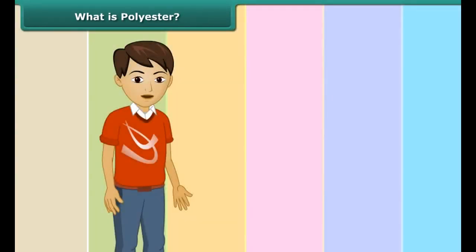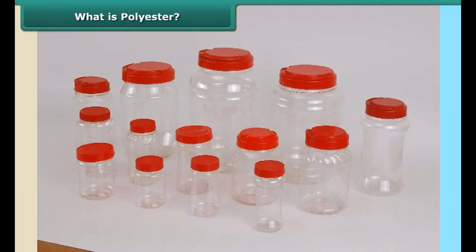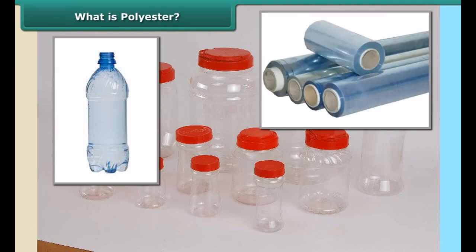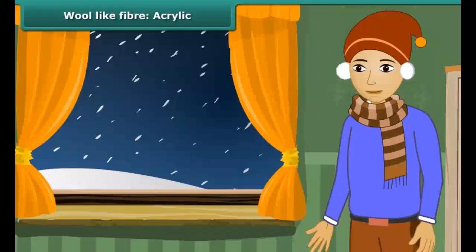Have you ever noticed that your mother always buys PET jars for storing rice, sugar, etc.? PET is a familiar form of polyester and is used for making bottles, jars, films, wires, etc.